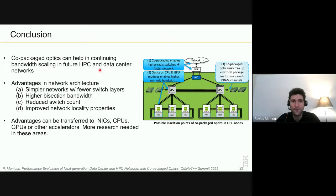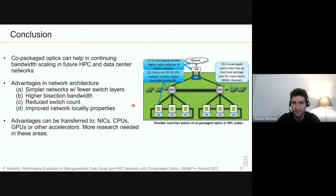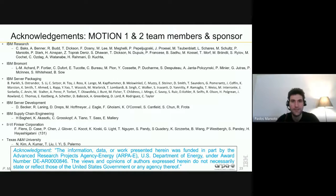To summarize: co-packaged optics can help continue bandwidth scaling in future systems. Considering both HPC and data center applications, the advantages are simpler networks with fewer switches, higher bisection bandwidth, reduced switch count making management and administration much easier, and improved network locality. These advantages can also be transferred to other parts of the system such as network interface cards, CPUs, and GPUs. More research is needed in those areas. Thank you for your time — if you have questions, I'm all ears.